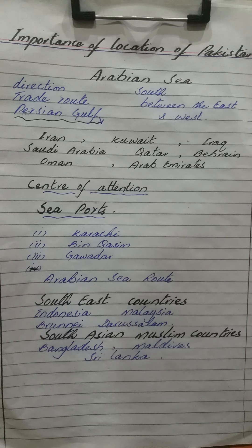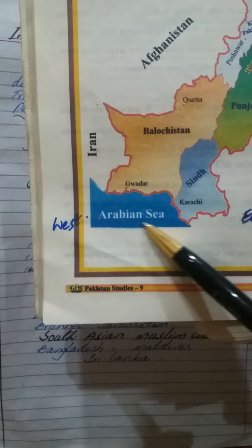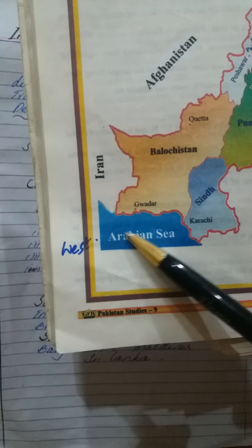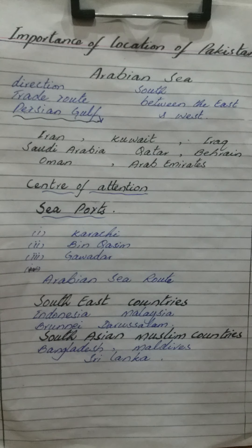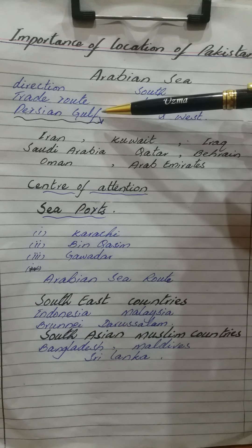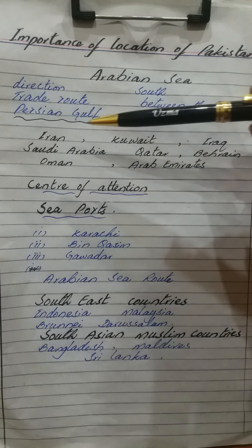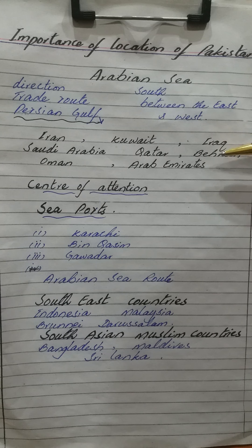As you can see on the map, towards the east side and towards the west side, this is a very important trade route. The Arabian Sea also has a connection with the Persian Gulf countries like Iran, Kuwait, Iraq, Saudi Arabia, Qatar, Bahrain, Oman, and the United Arab Emirates.